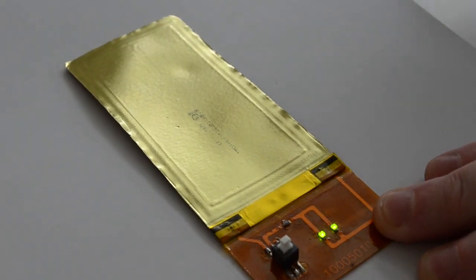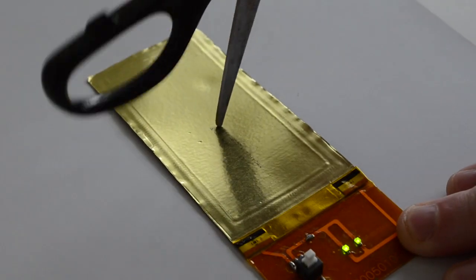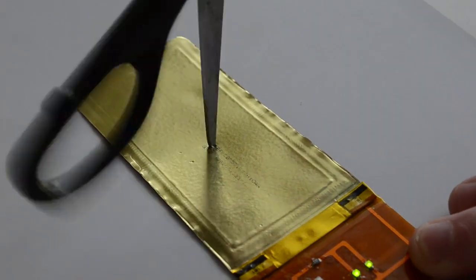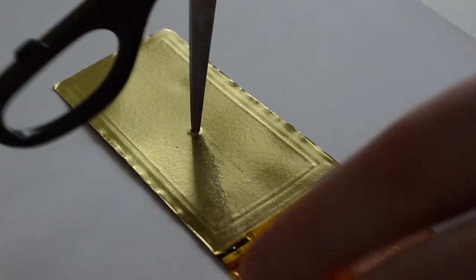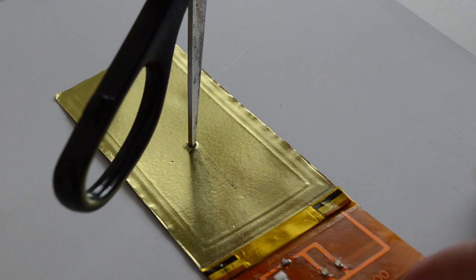While at the Prologium offices, we were invited to look at an FLCB which we could then attack with a pair of scissors to demonstrate just how impervious to impact and physical stress these batteries really are.